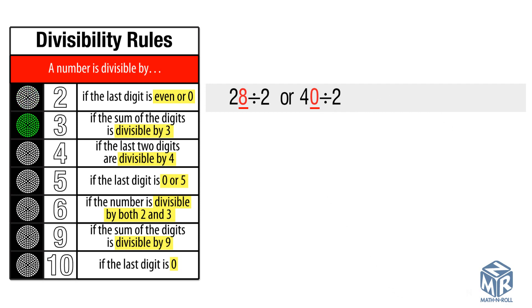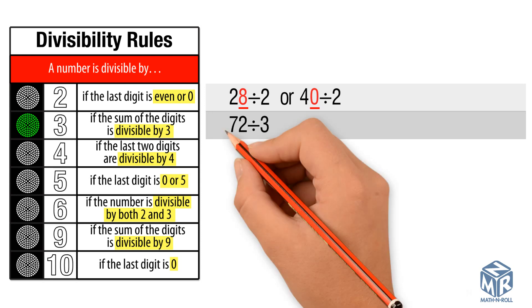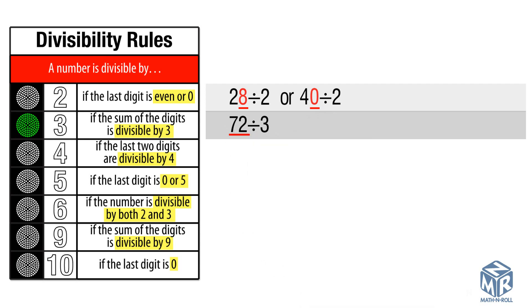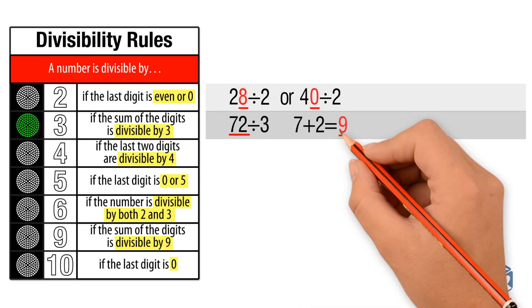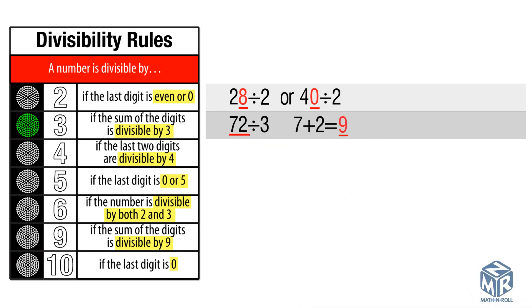A number is divisible by 3 if the sum of the digits is divisible by 3. 72 divided by 3: 7 plus 2 equals 9, and 9 is divisible by 3, so 72 is divisible by 3.